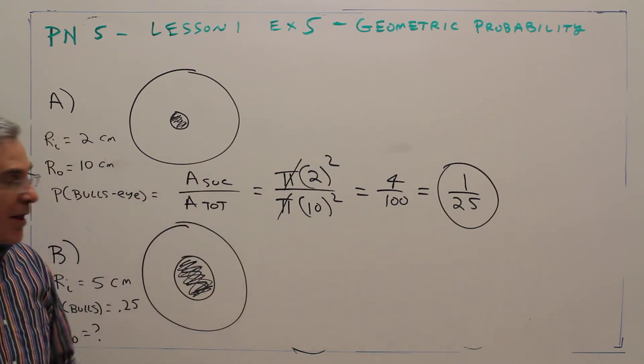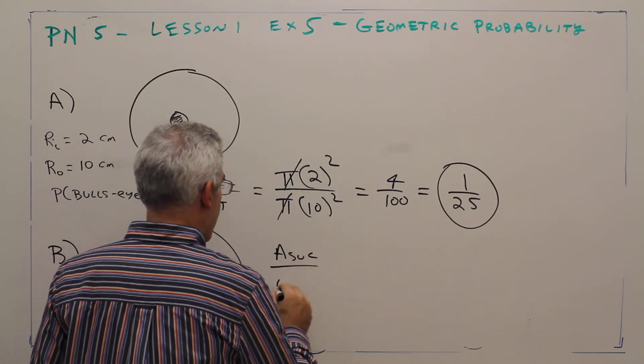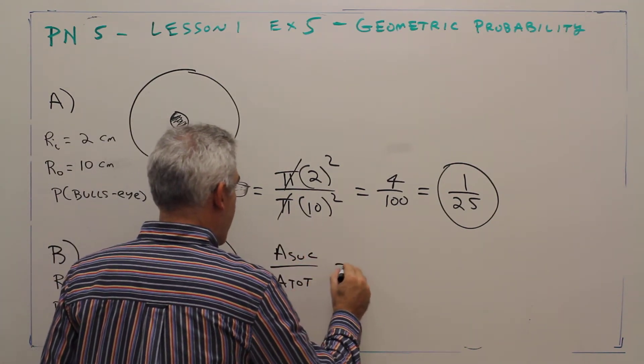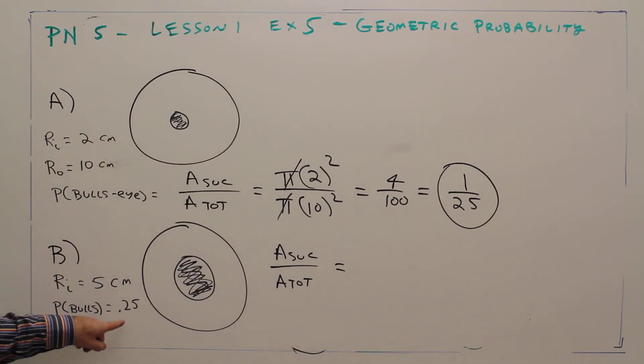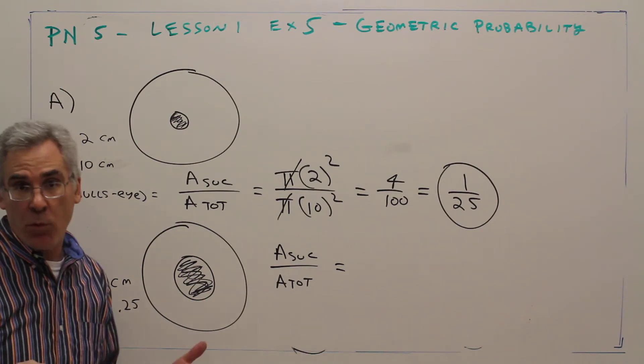So let's do the same kind of setup: area of success over area total. In this case, I know what that probability is. It's 0.25. Let's convert that to be a fraction: one fourth.